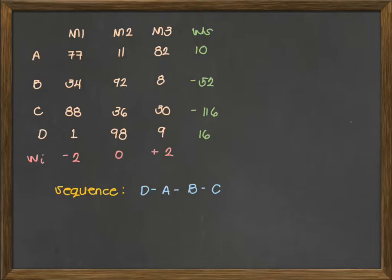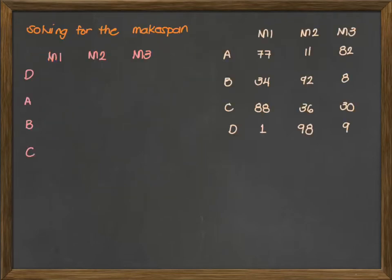Once we have completed the sequence, the next step is to compute for the makespan and the idle time of the sequence. We're writing our job flow: D, A, B, C for the three machines. Same procedure for computing for the makespan. We have 1 plus 98, that's 99. Then 99 plus 9, so we have 108. Then for job A, we have 1 plus 77, that's 78. Comparing the two, which is larger, 99. So 99 plus 11, that's 110. Again, compare the two. 110 versus 108. So 110 plus 82 will give us 192.